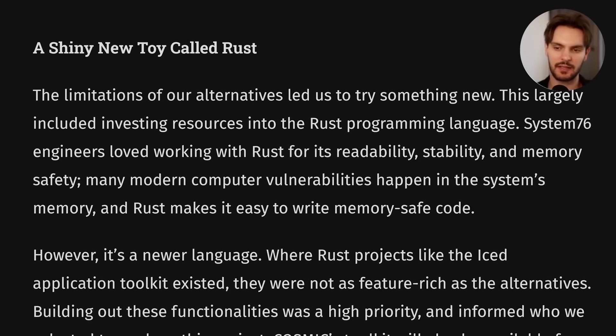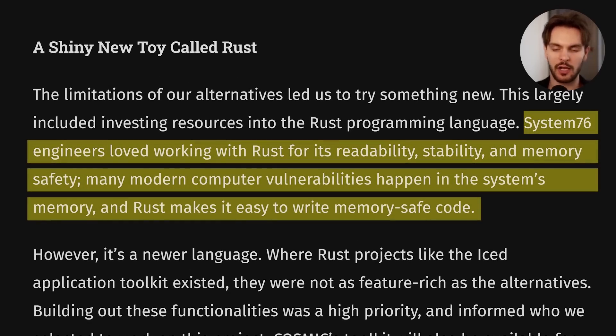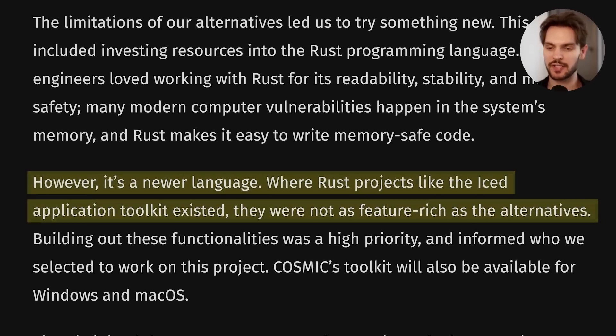In a blog post by System76, the company behind Pop! OS, it mentions that the engineers working on Cosmic loved working with Rust for its readability, stability, and memory safety. However, they also mentioned that because Rust is a newer language, the ecosystem is not as feature-rich as in other languages, which led them to contribute to open-source Rust libraries and build some custom Rust libraries of their own. Personally, I'm extremely excited to see more Rust adoption in the Linux ecosystem, and I'd be really interested in a deeper retrospective from the Cosmic team about their experience with Rust.